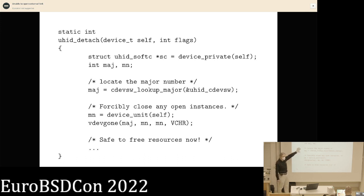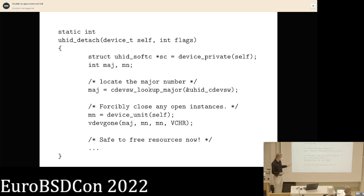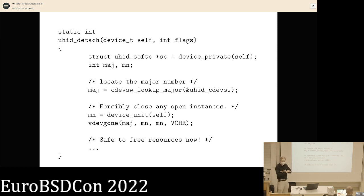In detach, when you yank the device, the detach function looks up the major and minor number and tells the kernel: find any open files for this major number and range of minor numbers that are character devices, revoke them. By the time vdev_gone returns, they have all been closed — no open, no read, no write, no ioctl, no close, no cancel, nothing. All of that is gone, and you can safely free all resources at that point.